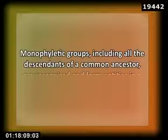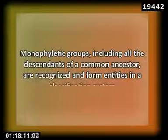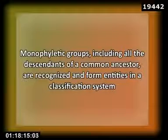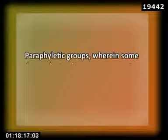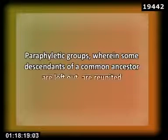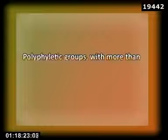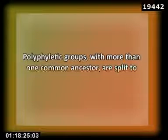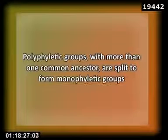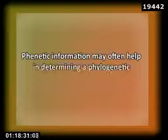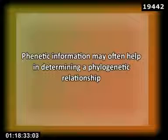Monophyletic groups, including all descendants of a common ancestor, are recognized and form entities in a classification system. Paraphyletic groups, wherein some descendants of a common ancestor are left out, are reunited. Polyphyletic groups with more than one common ancestor are split to form monophyletic groups. Polyphyletic information may often help in determining phylogenetic relationships.